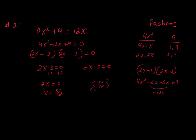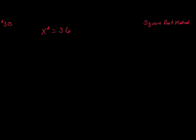For number 30, we're going to use the square root method. The square root method applies when we have x to the second power — we take the square root of both sides, and we include plus or minus. The reason is that negative 2 times negative 2 gives 4, and 2 times 2 also gives 4.